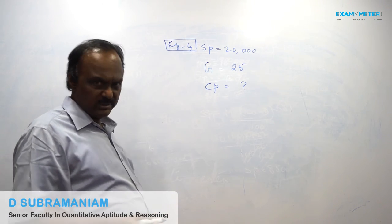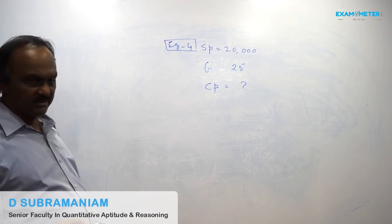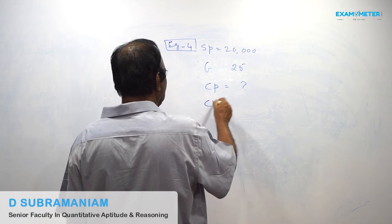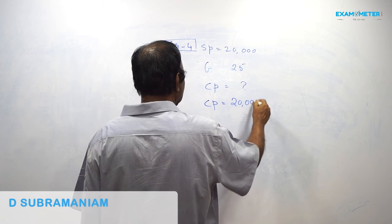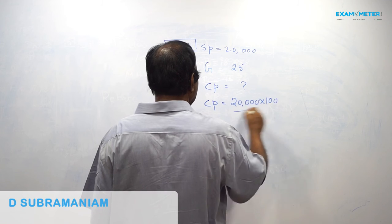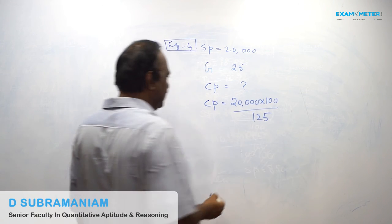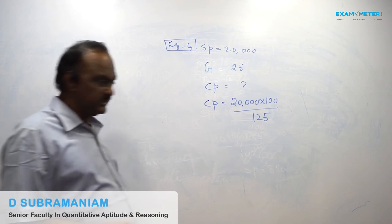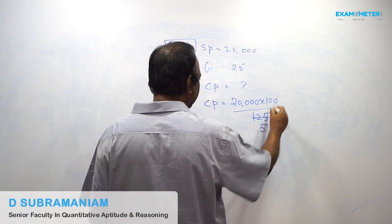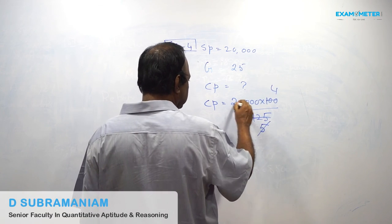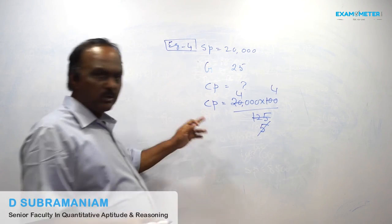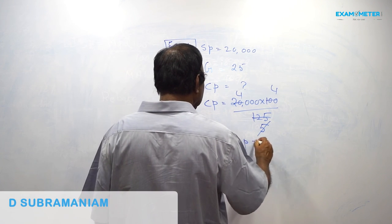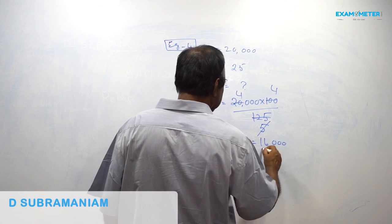Example number four: Selling Price is twenty thousand, Gain Percent is 25%. Find out the Cost Price. Apply Formula number 3: Cost Price = SP × 100 / (100 + Gain%) = 20,000 × 100 / 125. Here, 25 cancels 5 times into 20,000 giving 4 times, so we get 4 × 4 = 16, followed by three zeros. Therefore, the Cost Price is sixteen thousand.